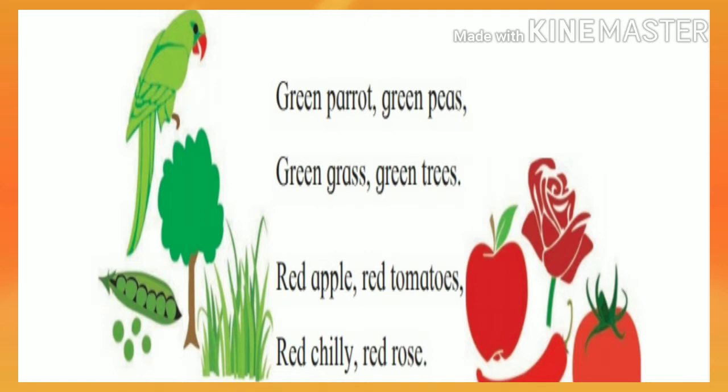Peas — chisheng (chickpeas) are green. Grass — gawad (grass) is green. Green trees — jahad (tree) is green. So we have: green parrot, green peas, green grass, green trees. Now what else is there?